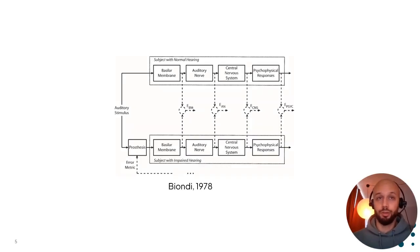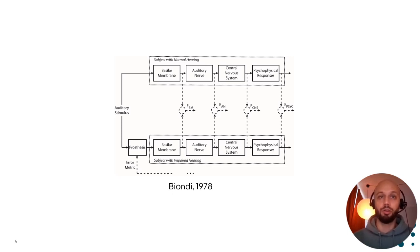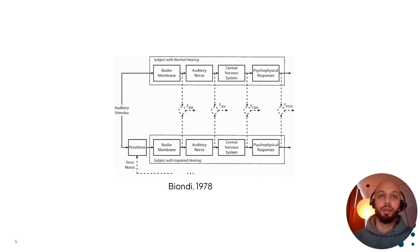The idea of using auditory models to derive hearing loss compensation algorithms is not new. Already in 1978, Biondi suggested using auditory models in the following way: take some stimuli and feed it through two branches. In the first upper branch, you feed the stimulus to an auditory model of a normal hearing subject, and the output could be a physiological response such as the basilar membrane velocity or the auditory nerve firing rate. In the other branch, you feed the stimulus through a hearing aid, and the output of the hearing aid is then fed through an auditory model of a hearing impaired subject. The difference between the two physiological responses is then minimized by tuning the parameters of the hearing aid, after which you can use it for hearing loss compensation.